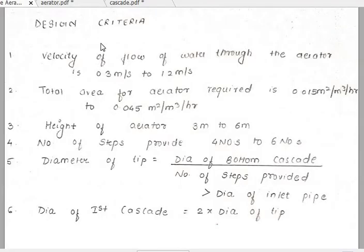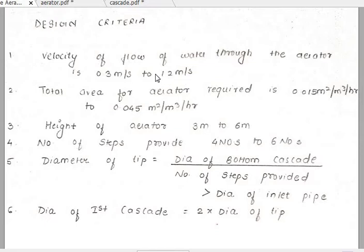These are the six types of design criteria based on which we have to design the cascade aerator, and it is a very important question from the examination point of view. Point number one: the velocity of flow of water through the aerator is 0.3 meter per second to 1.2 meter per second, meaning the velocity should be kept within this range.